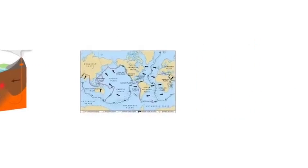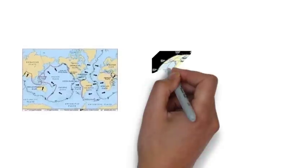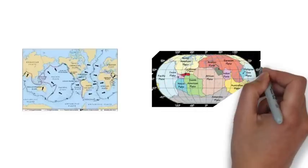Tectonic plates are pieces of the Earth's crust, have a thickness of about 100 km and are divided into major, minor and microplates. A crust may have different types of rocks.